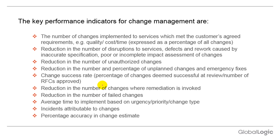Change success rate: percentage of changes deemed successful at review, and number of RFCs approved. We must ensure a successful change management rate for all approved RFCs. Reduction in the number of changes where remediation is invoked, reduction in failed changes, average time to implement based on urgency, priority, and change type, incidents attributed to change, and percentage accuracy of change estimates. These KPIs are very important for effective change management process implementation.